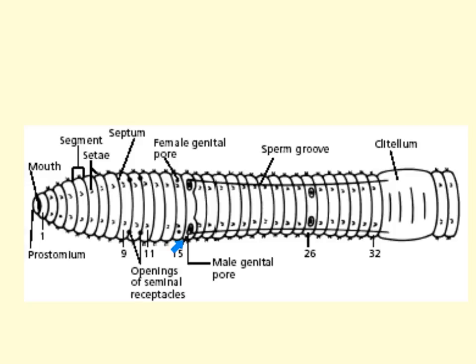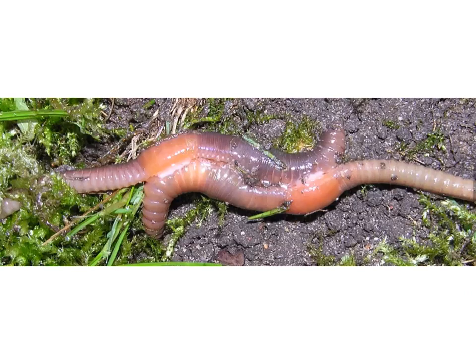Additionally, a pair of swollen areas with sperm duct openings are located on each side of the ventral surface on segment 15. The oviduct openings are located on the ventral surface of segment 14. This is because the earthworms are hermaphroditic — both male and female reproductive organs occur in one individual.